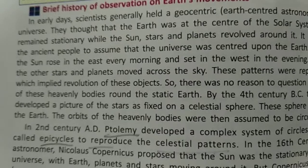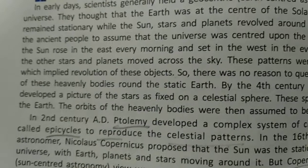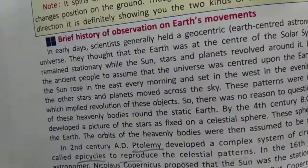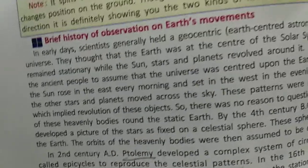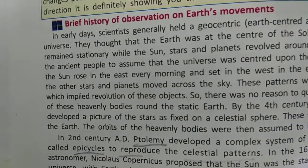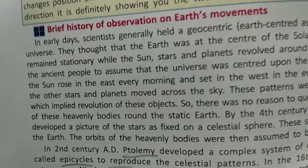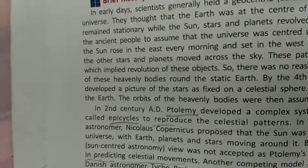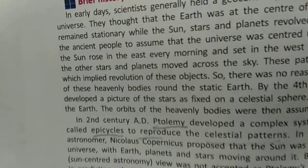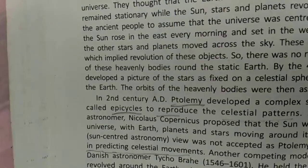For ancient people, this geocentric view was natural. As discoveries were made, it was found that no, the earth is moving. According to their observations, the Sun rose in the east in the morning and set in the west in the evening. They also saw stars and planets moving across the sky in a repeating daily cycle, so there was no reason for them to question whether it was actually the earth that was moving.